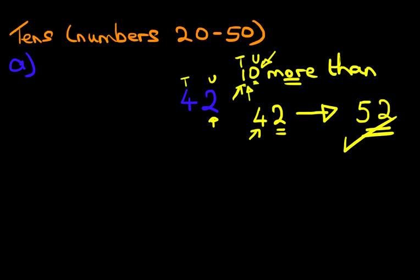On this side, let's have a look at 10 less than. So what is 10 less than 42? Now exactly the same principles apply. The 0 is a unit and the 1 is a 10. So because of this 0, the number 2 here will not change.